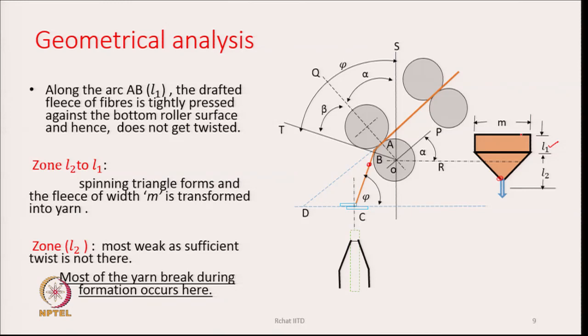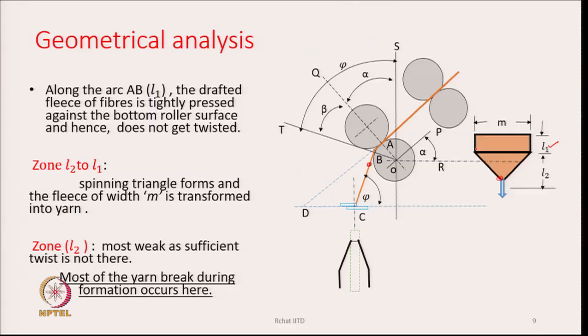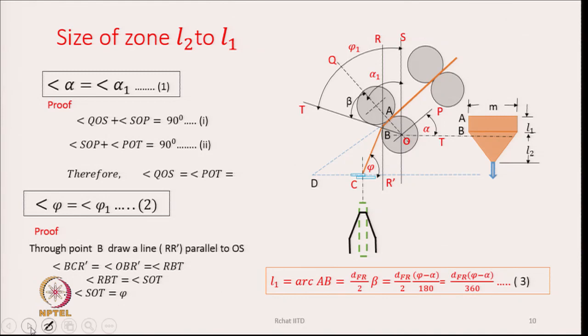Zone L2 is the most weak zone as sufficient twist is not there and there is no support to it. Most yarn breakage occurs in zone L2. Looking at the diagram, angle alpha — the inclination angle of the drafting zone or drafting system — and angle alpha-1 are essentially the same. Angle psi equals angle psi-1, and the proof is given in the slide.